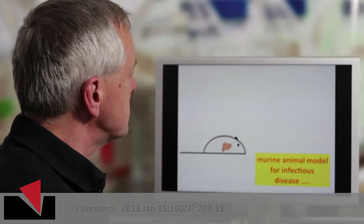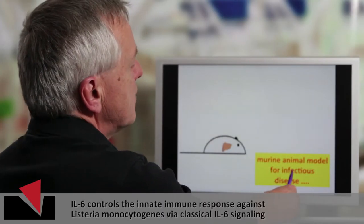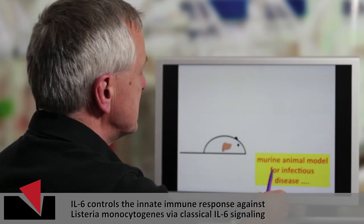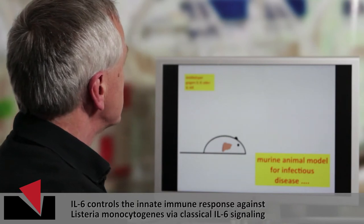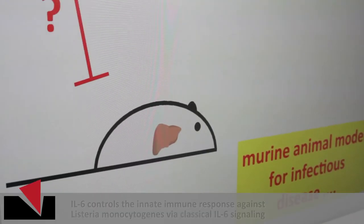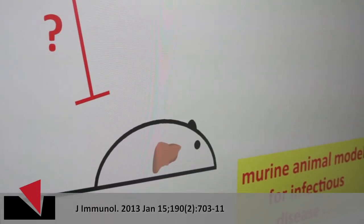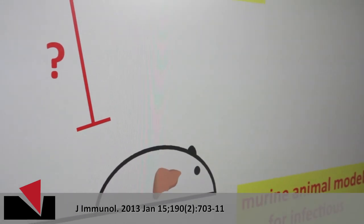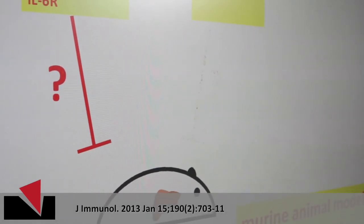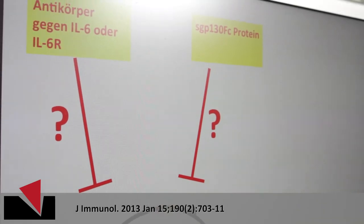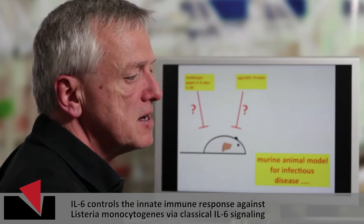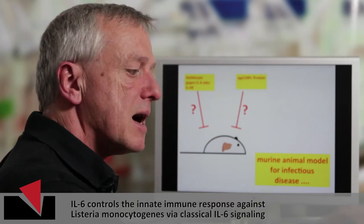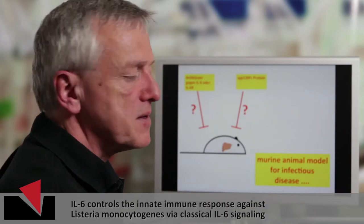We used a murine model for bacterial infectious diseases. After infection of the mice, we treated the mice either with a neutralizing antibody against IL-6 or with the just-introduced soluble GP130-FC. And then we monitored how the course of the infectious disease would proceed after the one or after the other treatment.